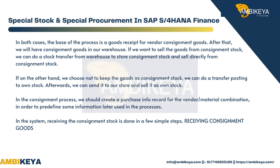In the consignment process, we should create a purchase info record for the vendor/material combination in order to pre-define some information later used in the processes. In the system, receiving the consignment stock is done in a few simple steps.